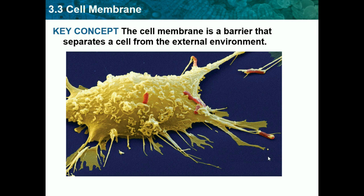The cell membrane is a barrier that separates a cell from the external environment, but it also helps keep the cell's shape, choose what comes in and out of the cell, and it protects the cell from the external environment.